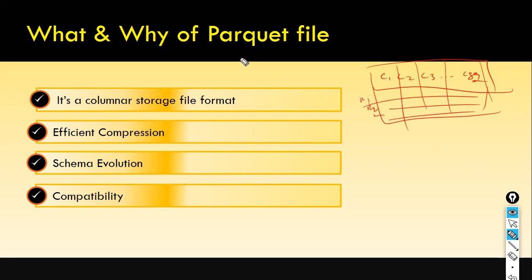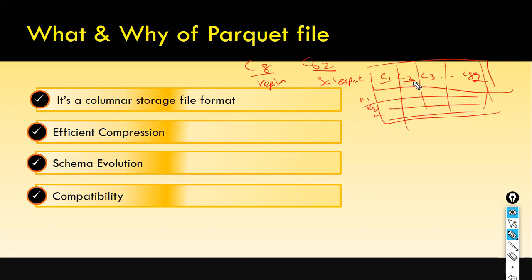Let's say you want to access only column 8 and column 62 — column 8 has the region name, and column 62 is the sales amount. Column 1 might be something like invoice number, line item key, order number, product key, and so on. But column 8 and column 62 have the region and sales amount.